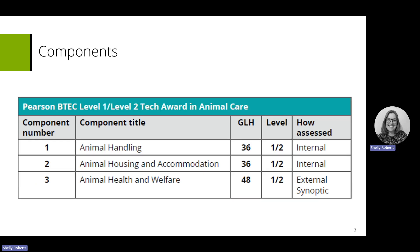Let's start by looking at the components for this qualification. 'Component' is the word we use — you might know it as module or unit — and for this qualification they're called components and there are three. Component one is animal handling, component two is animal housing and accommodation, and both of these are internally assessed modules. They are assessed through moderation and there is training covering this if you want to know more about these modules.